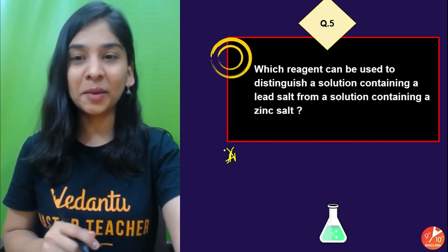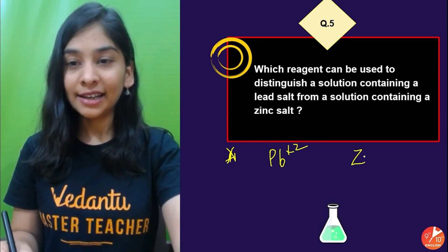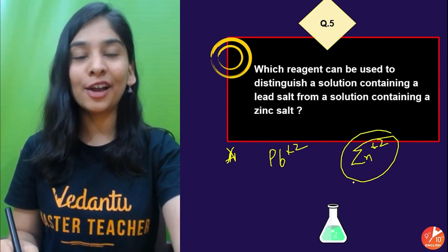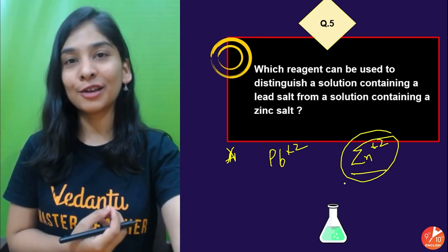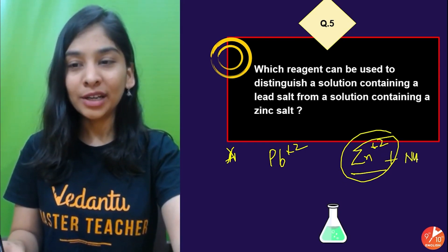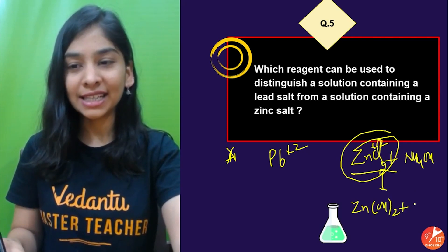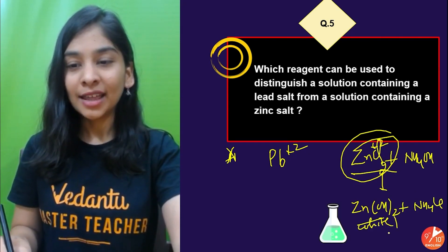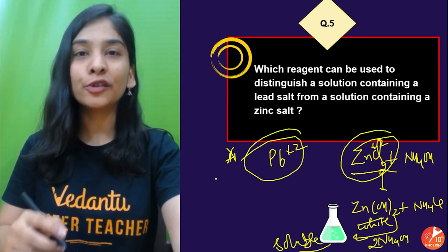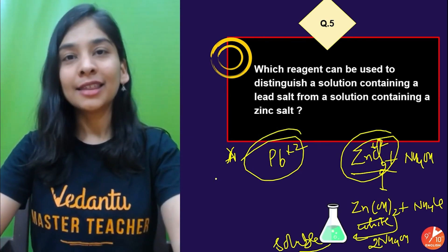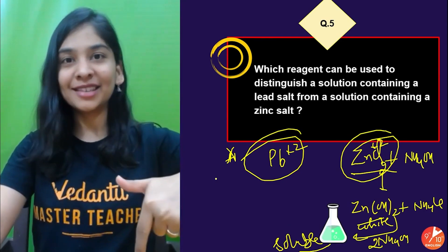Question number five: Which reagent can be used to distinguish a solution containing a lead salt from one containing a zinc salt? Always choose ammonium hydroxide when dealing with zinc or copper ions, because they are soluble in excess ammonium hydroxide. With zinc nitrate and ammonium hydroxide: Zn(OH)₂ (white precipitate) forms first, which then dissolves in excess NH₄OH to give a soluble complex. Lead will not show this behavior, so ammonium hydroxide distinguishes them.